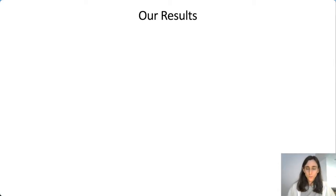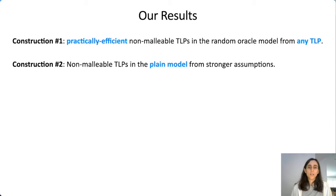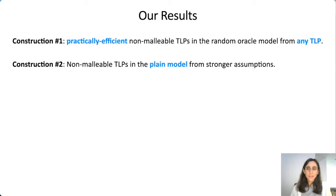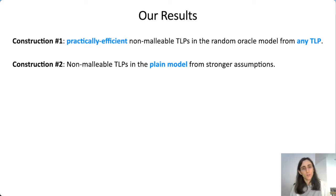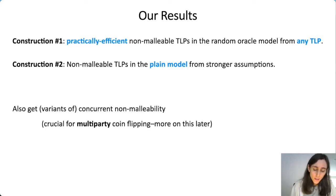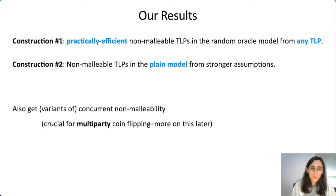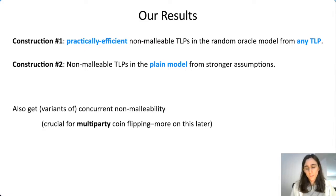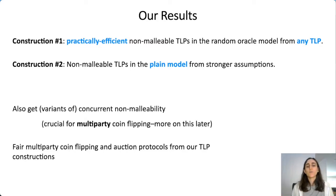Our first two results are constructions of non-malleable time-lock puzzles in different settings. Our first construction is incredibly efficient and in the random-oracle model, relying generically on any time-lock puzzle. Our second construction is in the plain model but relies on stronger sub-exponential-style assumptions. So it's a trade-off between what model you want and how much efficiency you want. Not only do we get non-malleability, but we get a variant of concurrent non-malleability, which is crucial for multi-party coin flipping. Either construction can be used to get fair multi-party coin flipping and auction protocols.